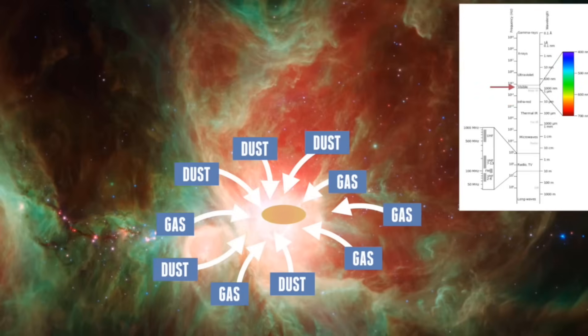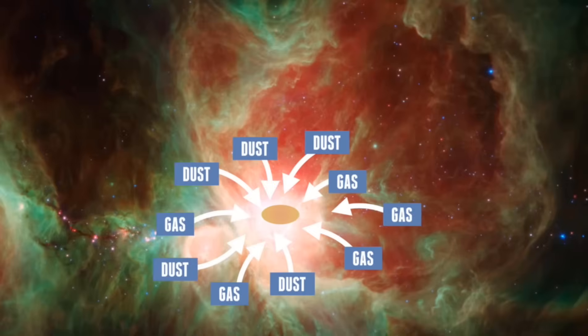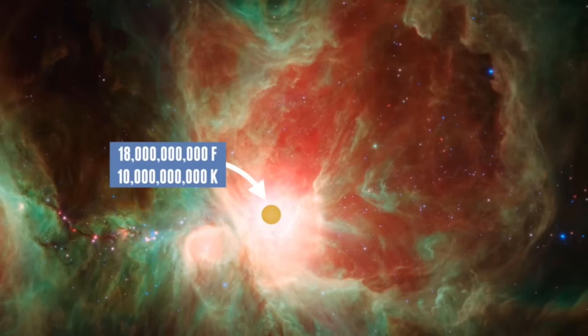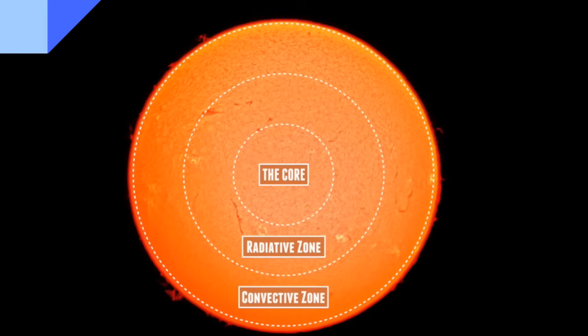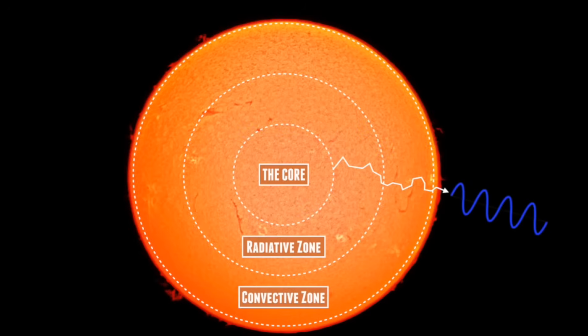As gravity continues to pull the infant star together, the centre of the collapsing ball of gas gets hotter and hotter, until temperatures at the middle reach an astonishing 10 billion degrees Celsius. The combined energy released by billions and billions of individual fusion reactions flows outward from the star's core. Some of it eventually emerges from the star's surface as light.